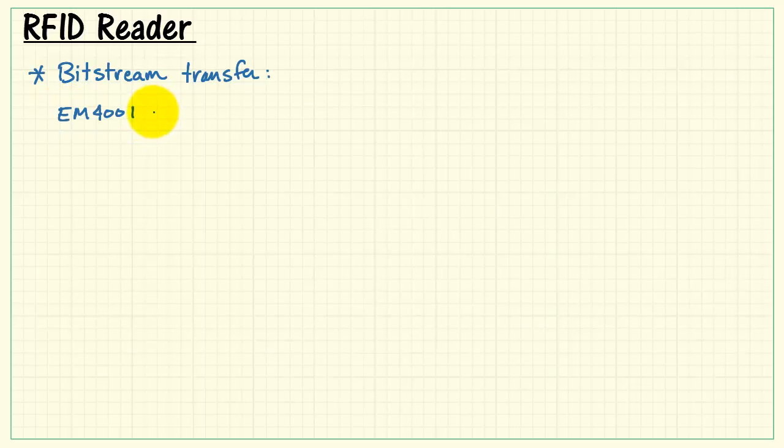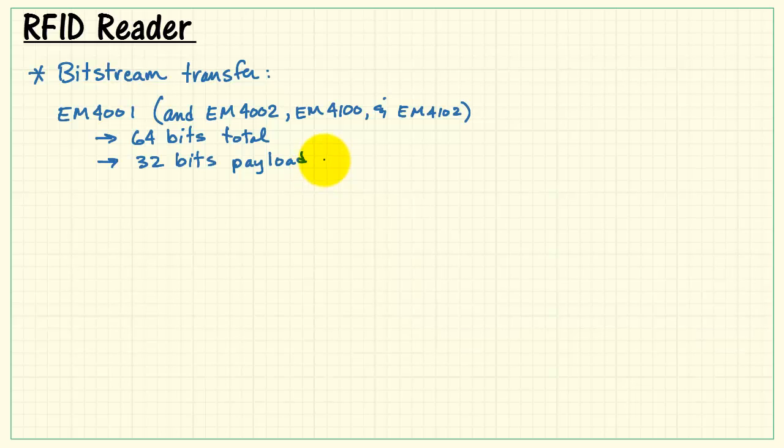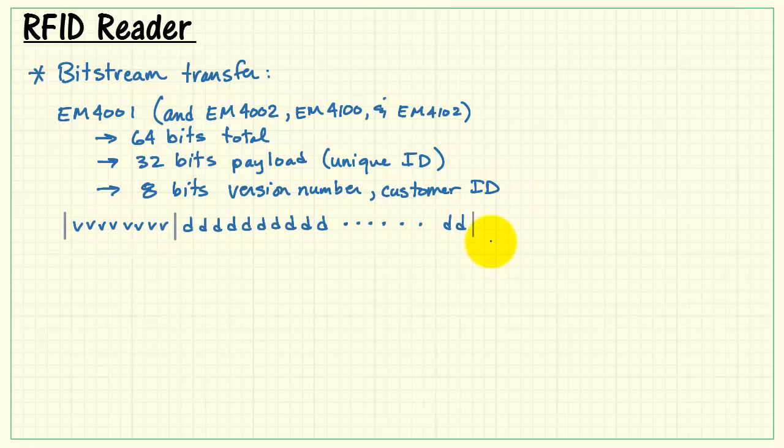Now, let's look at the EM4001 standard. This is equivalent to a number of other subsequent devices. This is based on a 64-bit transfer total with a 32-bit payload of unique identification. We use 8 bits for a version number or a custom ID, and then we have 40 bits total. V, again, means the version number, D for our data bits.